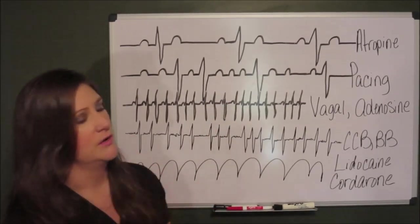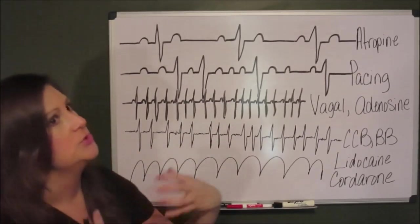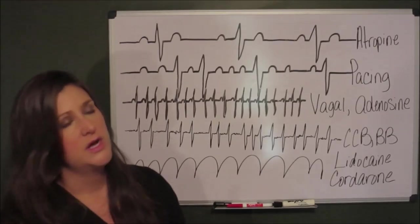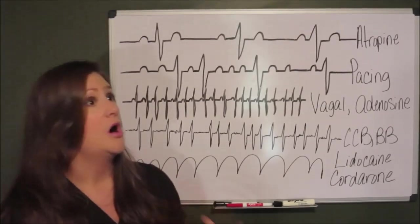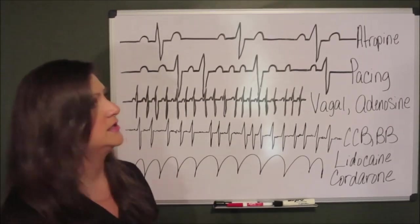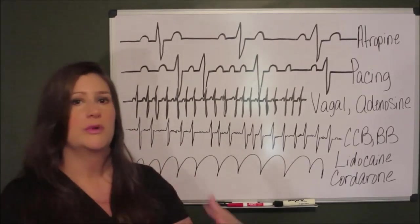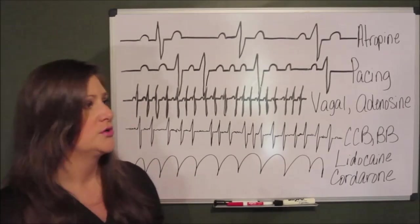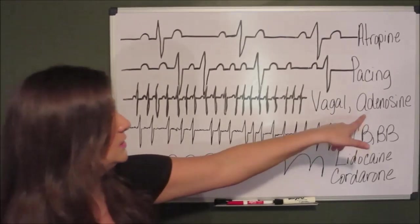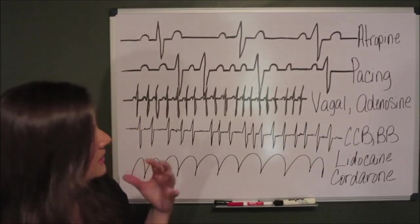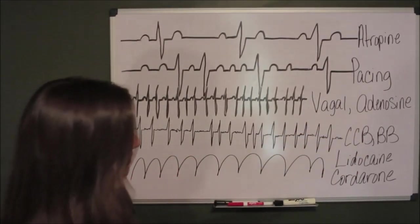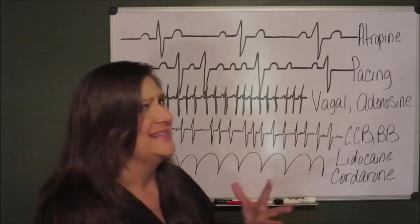With SVT, we're trying to stimulate the vagus nerve. Bear down, cough, put ice on the bridge of their nose. The next treatment is adenosine.